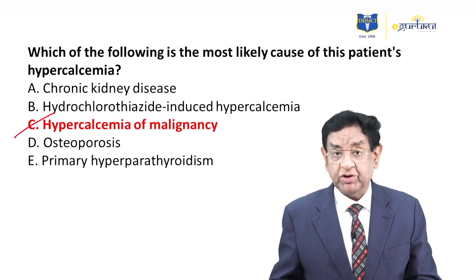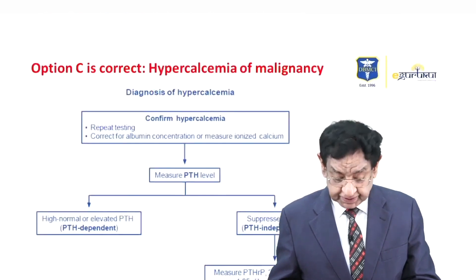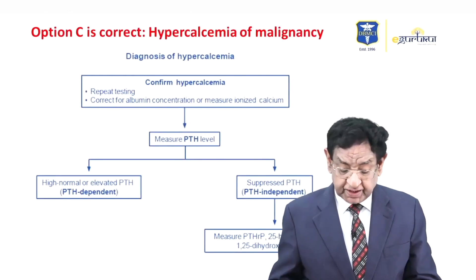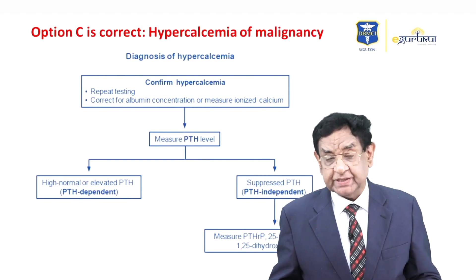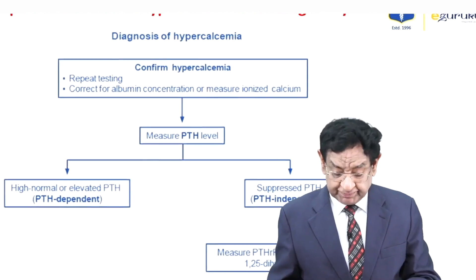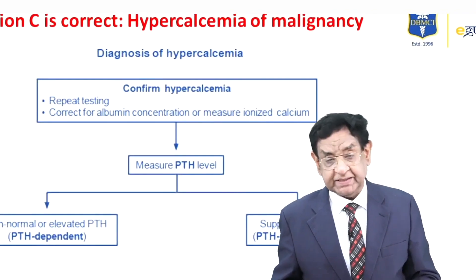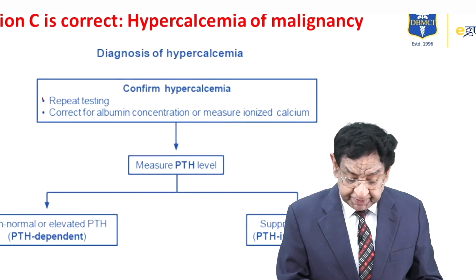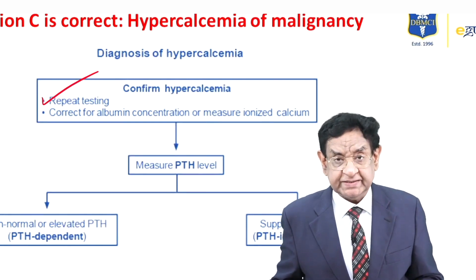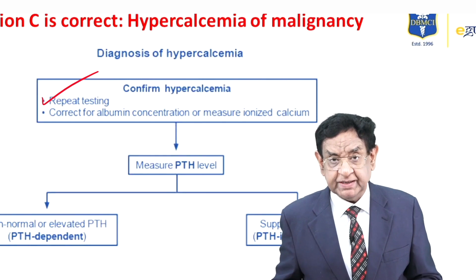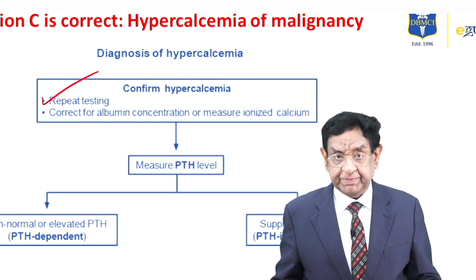Why this answer and not others? Let's go into more detail. When we talk about hypercalcemia and how to approach the case, first of all when we get a hypercalcemia result, you have to confirm it by repeated testing. A single reading should not be taken for granted — it is better to confirm and reconfirm by repeated checking.